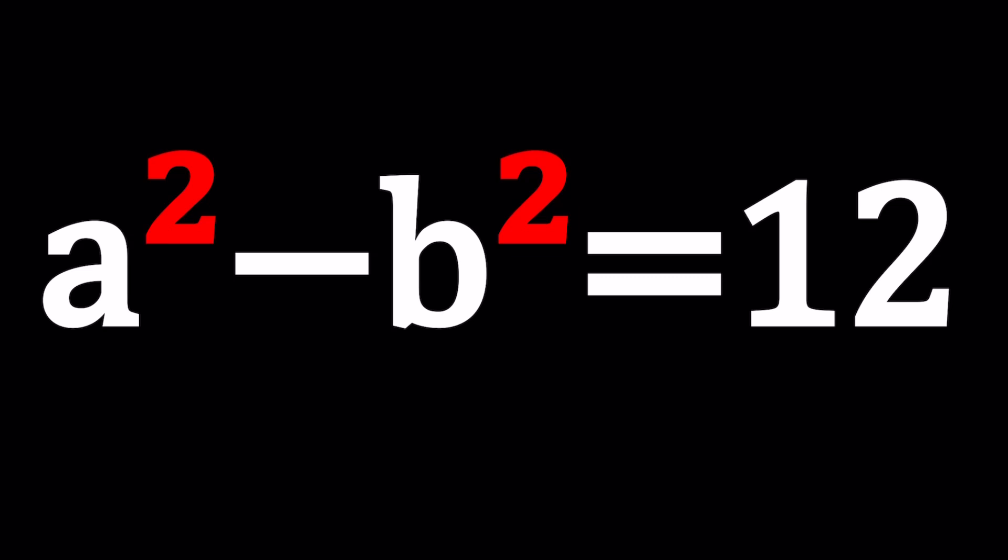We have a² - b² = 12, and if you remember, with the first method we used an identity to solve the problem. But suppose you don't know that identity, which is very unlikely, but let's pretend you do not know what difference of two squares means.